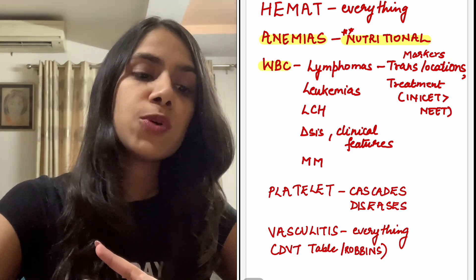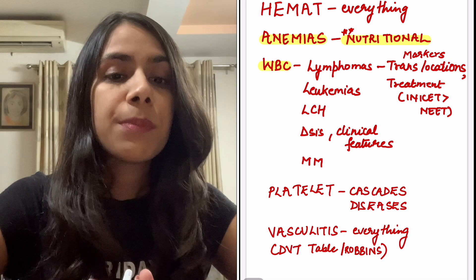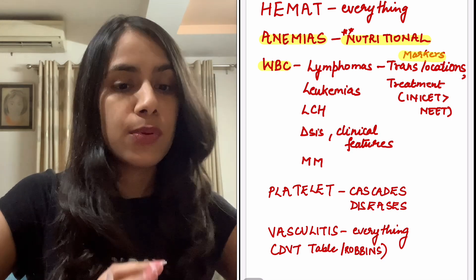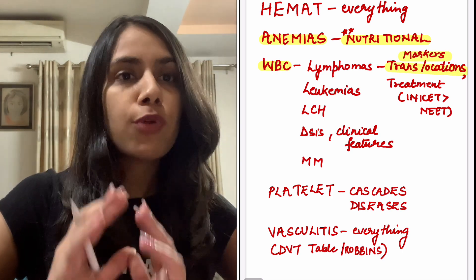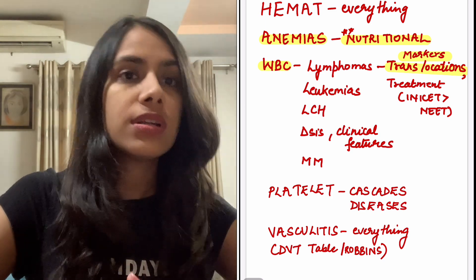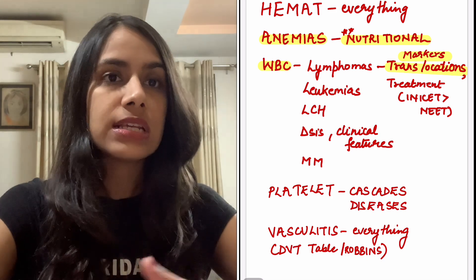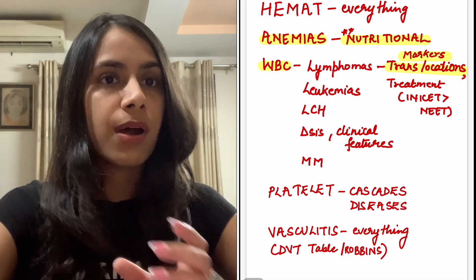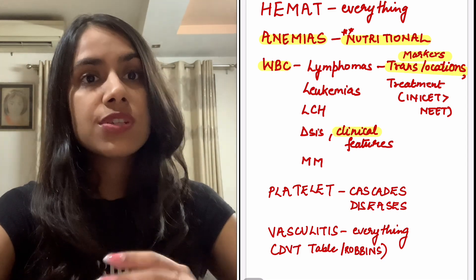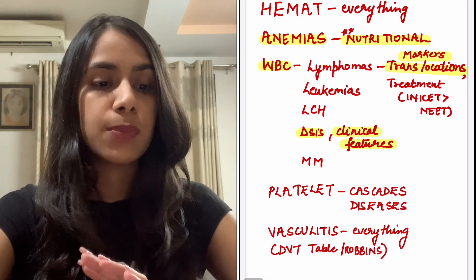Then WBCs — lymphomas, leukemias, multiple myeloma — anything under the sun can come. What you simply cannot miss are the CD markers and the translocations; there are always a couple of questions on that. The treatment aspect you can probably skip for NEET PG as it may not be tested that much, but for INI-CET it is important and drugs come frequently. If you're targeting INI-CET, definitely look at them now. When doing these questions, try to see the clinical features because usually clinical histories are given along with some lab parameters and you have to make the diagnosis.